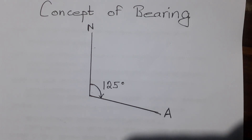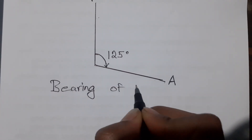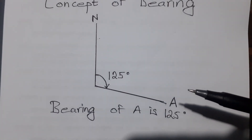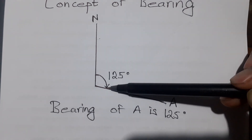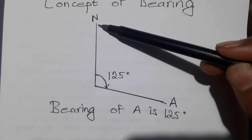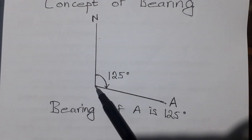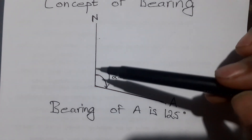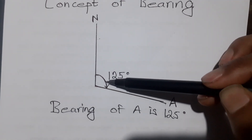The bearing of A is 125 degrees. Practically, we start with North as the starting point. Here I'll note that we want to follow the other line.